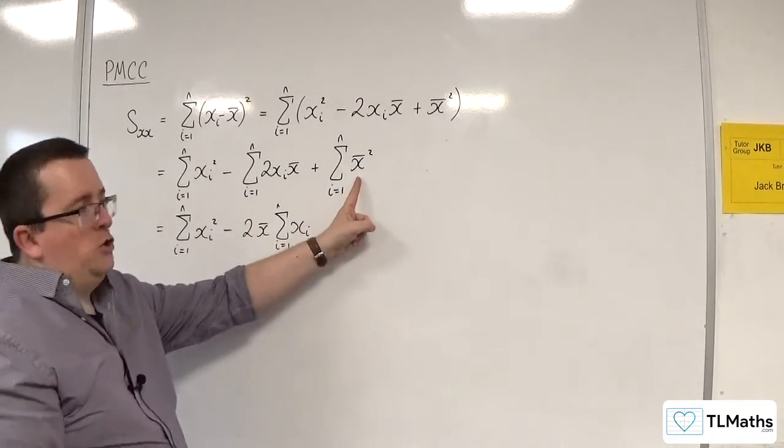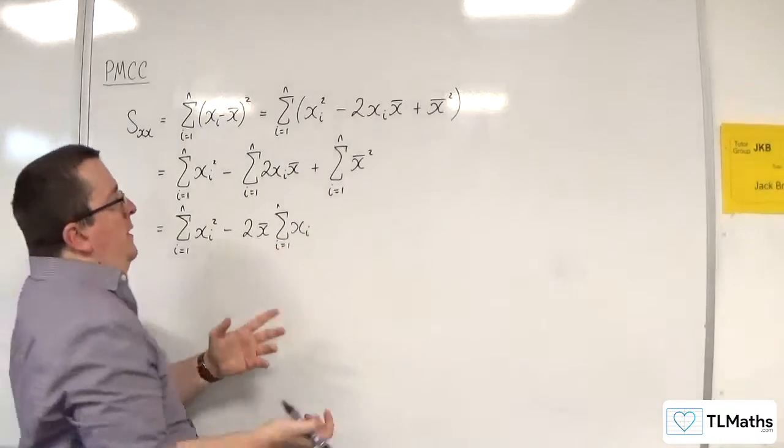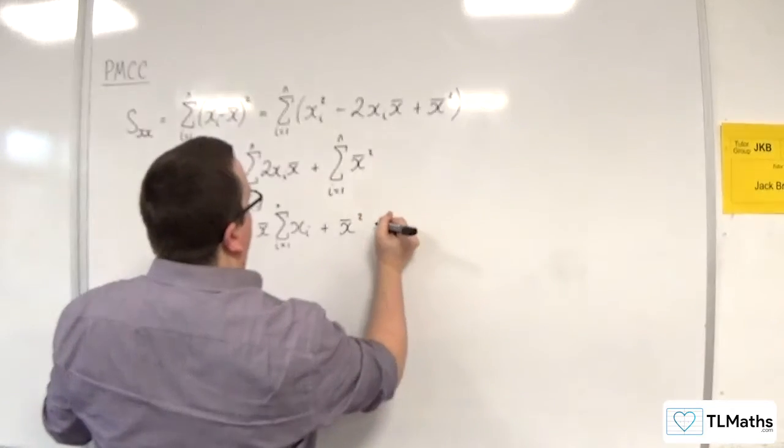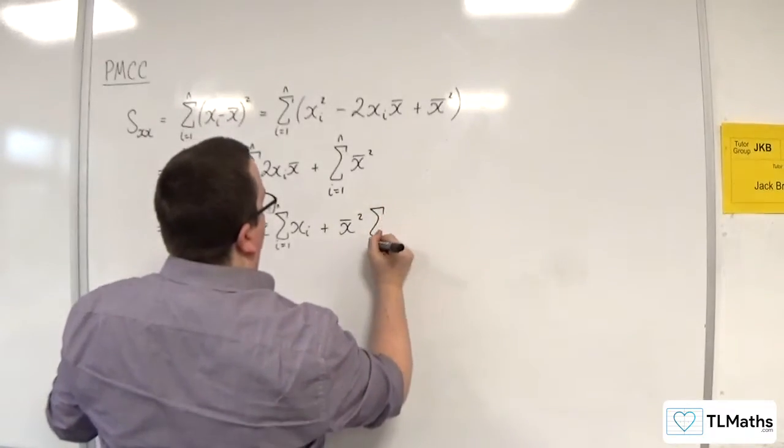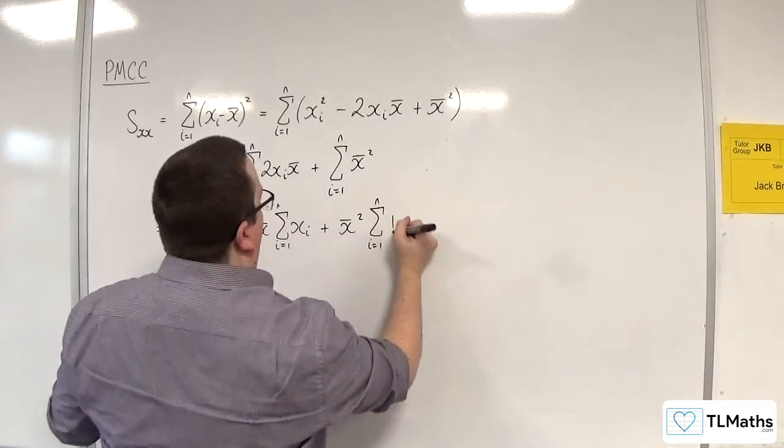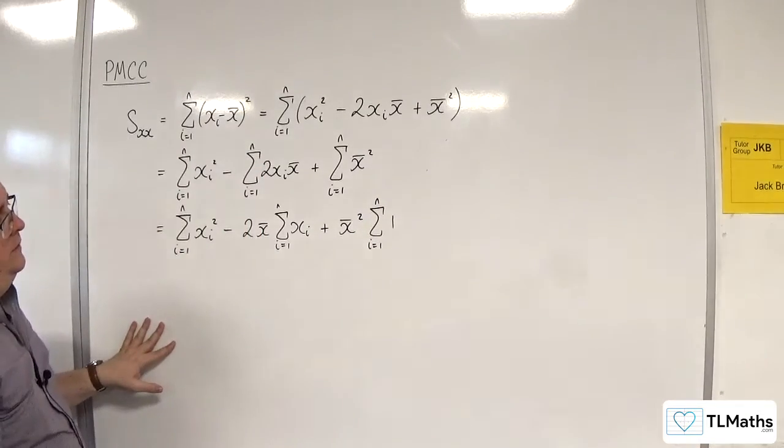And the X bar squared is just a constant term, so I'm going to factor that out and have X bar squared times the sum from i is 1 to n of 1.